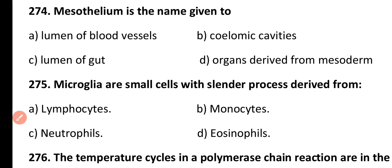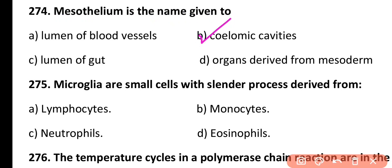Question 274. Mesothelium is the name given to: lumen of blood vessels, coelomic cavities, lumen of gut, or organs derived from mesoderm. Correct answer is Option B. Mesothelium refers to the coelomic cavities that surround the internal body organs.